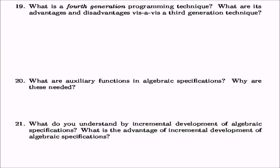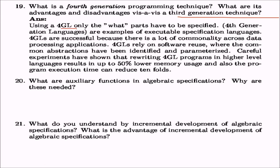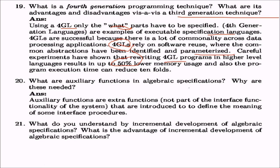Question 19: what is a fourth-generation programming language (4GL) and what are its advantages and disadvantages against third-generation techniques? Using a 4GL, only the 'what' parts have to be specified. 4GLs are examples of executable specification languages. They are successful because they exploit commonality between data processing applications — they rely on software reuse where common abstractions have been identified and parameterized. Experiments have shown that rewriting 4GL programs in higher-level ranges results in up to 50% lower memory usage and up to tenfold reduction in execution time.